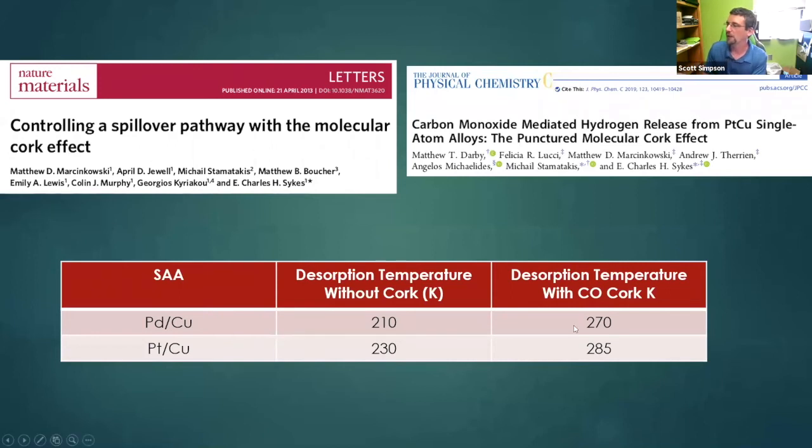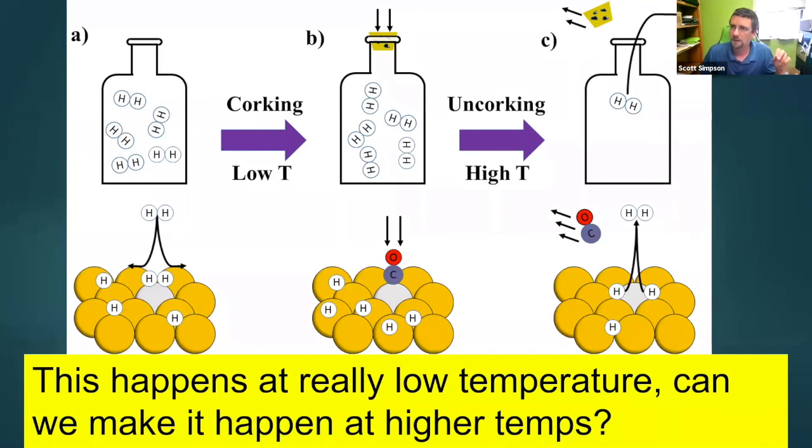Even by throwing on carbon monoxide, we raise that temperature a ton, which is great, but it's still in a not usable range. So the idea behind what I'm trying to do is, can we make this happen at higher temperatures? So really the only thing that's been investigated for a molecular cork is carbon monoxide, which is kind of bad because it's poisonous and it's dangerous to utilize.